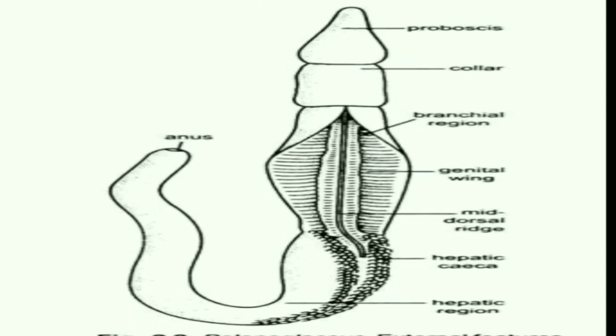The burrow has two openings and a third depression called a feeding funnel, just in front of the front opening. The hind opening of the burrow is closed by fecal matter. The burrow is made up of sand grains cemented together by sticky mucus produced by epidermal glands.